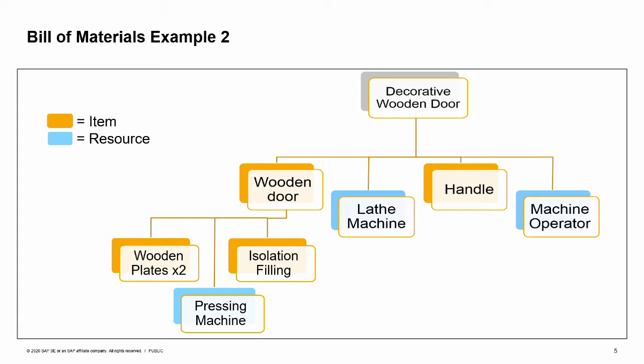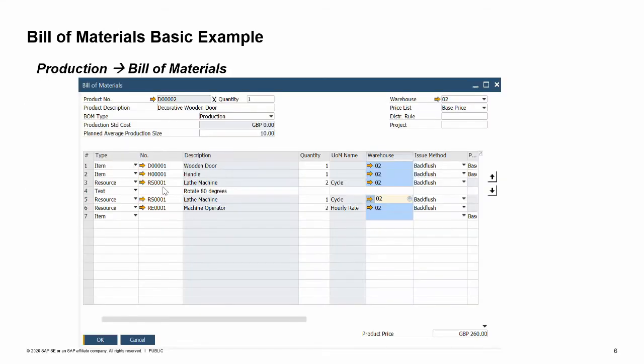To start a production process, this Bill of Materials is copied to a production order. We will further discuss the production order in the production process topic. This is what the decorative wooden door Bill of Materials looks like in the system. We can see that the decorative door is a combination of one wooden door, one handle, a total of three cycles of the lathe machine, and one machine operator hour — 2 x 0.5 hours. At Woodtrend, Warehouse 02 has been defined as the shop floor area and is indicated in the document rows.